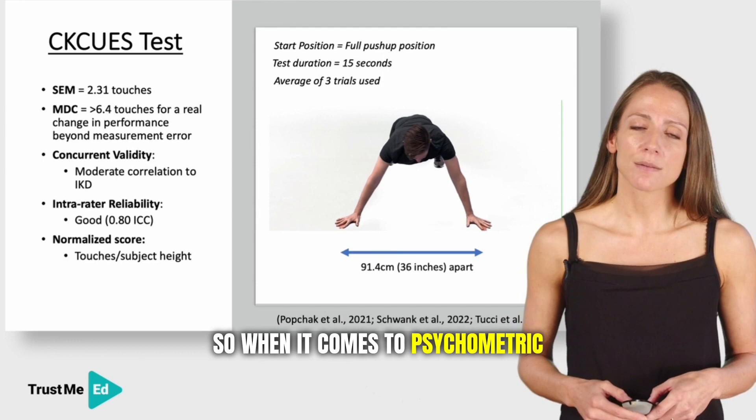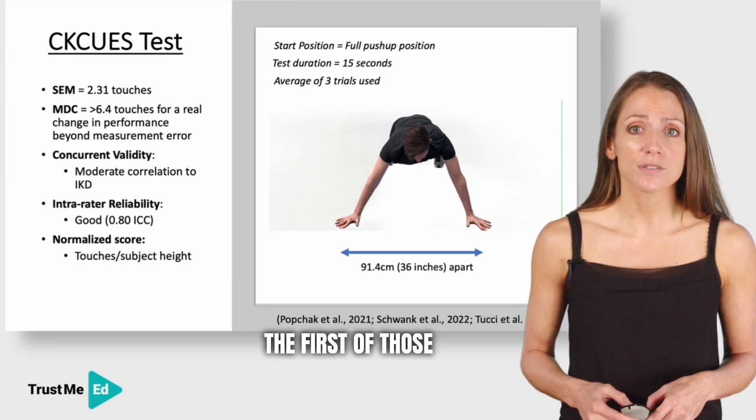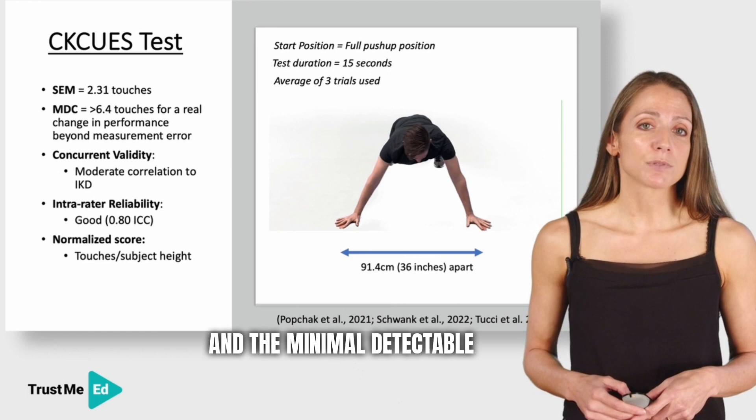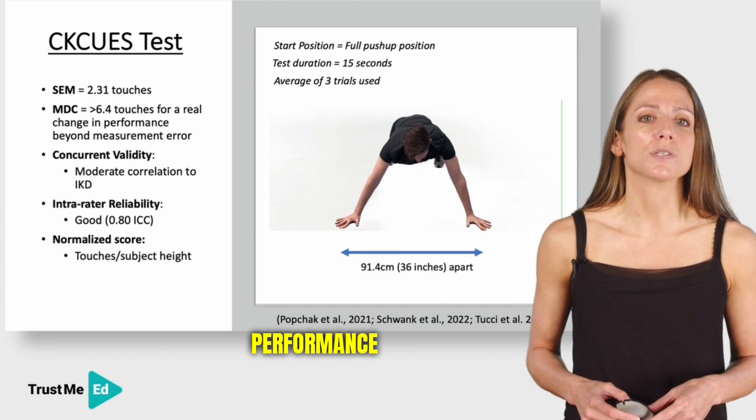When it comes to psychometric properties and performance tests, we look at a few key components. The first of those is the standard error of measurement and the minimal detectable change. The standard error of measurement is essentially what general error can happen if I do the test and do it again. The minimal detectable change is how much change we need to see to be sure there's been a change in actual performance and not just measurement error.